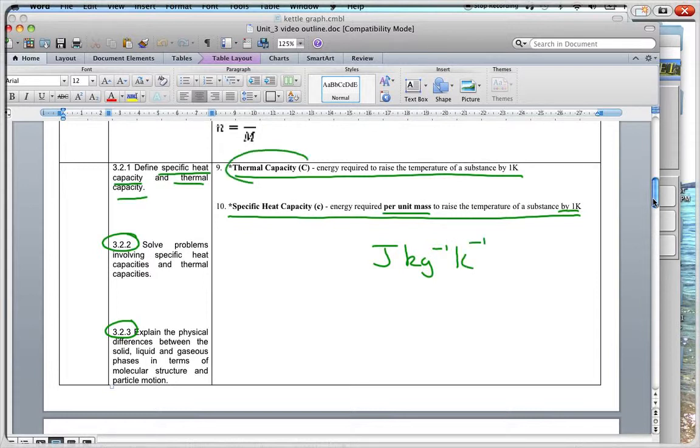Now, the thermal capacity is actually looking at a specific object. So you may find the specific heat capacity of a pair of scissors, for instance. So it is just the amount of energy required to raise the temperature of a substance by 1 Kelvin. We are not looking at per kilogram or per mass. So the unit for this is a joule per Kelvin.